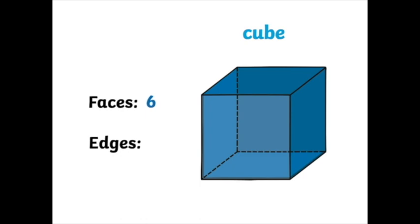A cube has 6 faces. Now, let's count the edges. 1, 2, 3, 4, 5, 6, 7, 8, 9, 10, 11, 12 edges. How many edges does a cube have? 12. A cube has 12 edges. So, that's how you would describe a cube. You could say a cube has 6 faces and 12 edges.